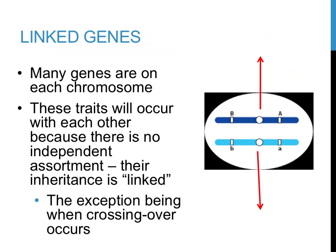Yet another possibility that differs from earlier examples involves linked traits. An assumption we made involving the product rule was that two traits would be located on two different chromosomes and passed on to offspring independently. Since humans possess 23 pairs of chromosomes containing some 20,000 genes, there must be numerous genes per chromosome. Genes located on the same chromosome, referred to as linked genes, are not passed on following the same patterns as genes on different chromosomes — they are typically passed on together. Examples include red hair color and freckles, which are frequently passed on together. One exception is when crossing over occurs, and there is a separate video on this topic entitled chromosome mapping.